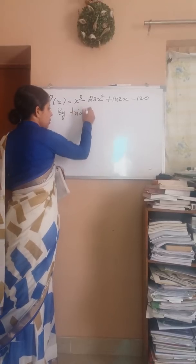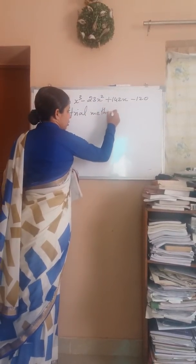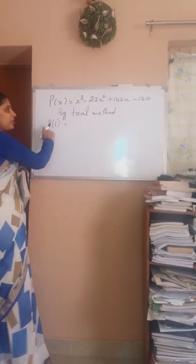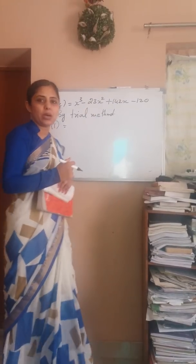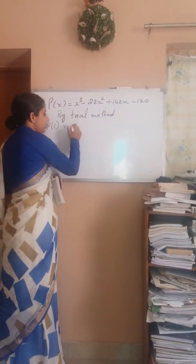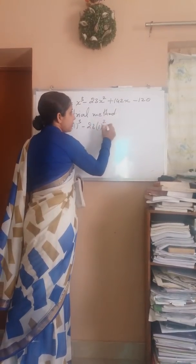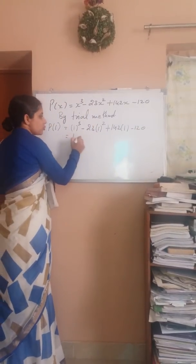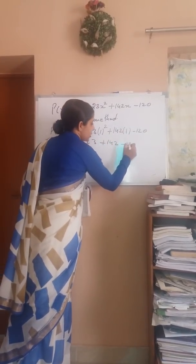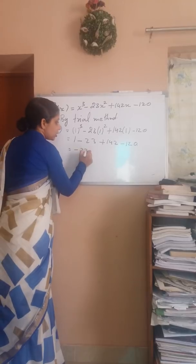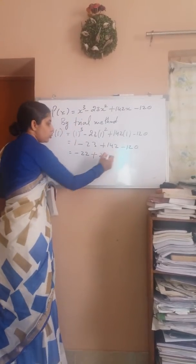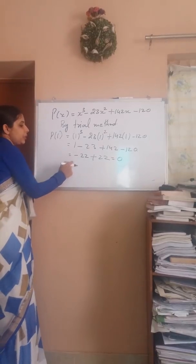By trial method, we'll put different values like ±1, ±2, ±3, ±4 and see at what value the polynomial becomes zero. First we'll put x = 1, so it is 1³ - 23(1²) + 142(1) - 120, which gives 1 - 23 + 142 - 120.